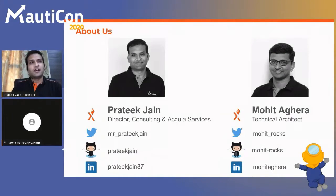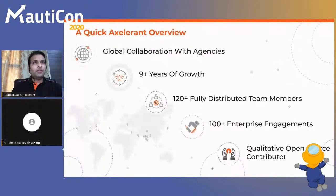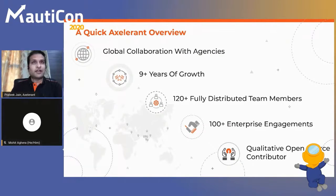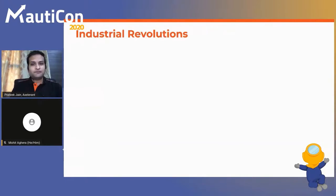Pratik is Director of Consulting Services at Axelerant, and Mohit is a Technical Architect. Both of our contact details are on screen. Before we get started, I want to give you a quick overview about Axelerant, the organization we work with. We are a value-driven agency with a world culture that fuels success through open source software, focusing on employee happiness, engineering excellence, and customer success. We are a fully distributed team of 120 professionals from all over India, present in six different time zones, and a globally recognized community-driven leader in open source web development, working with technologies like Drupal and Mautic.